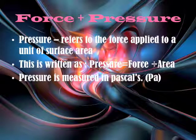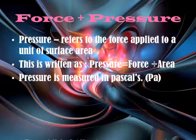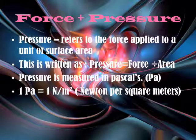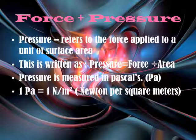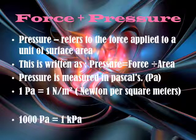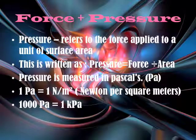Pressure is measured in pascals, which is Pa. 1 Pa equals 1 N/m squared, which is Newton per square meter. 1,000 Pa equals 1 kPa.